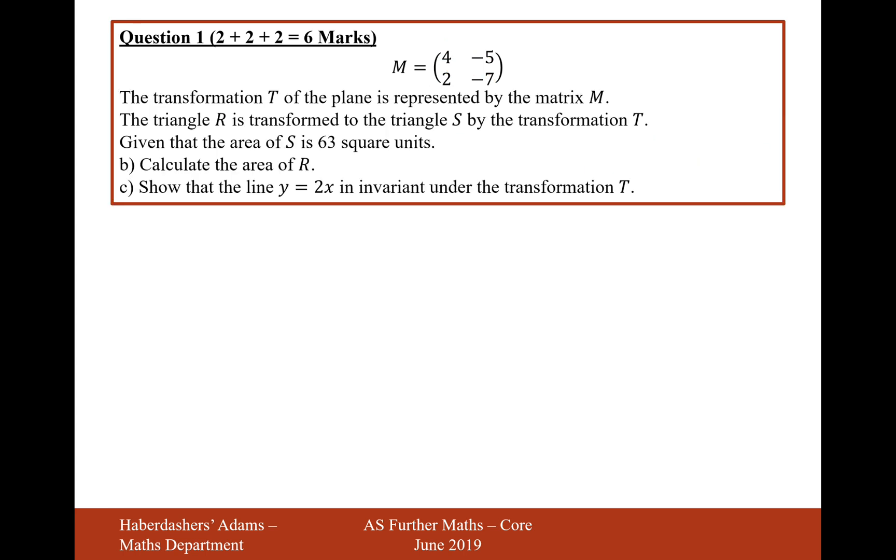Let's move on to part B and C. The transformation T of the plane is represented by matrix M. The triangle R is transformed to triangle S by the transformation T. Given that the area of S is 63 square units, calculate the area of R.